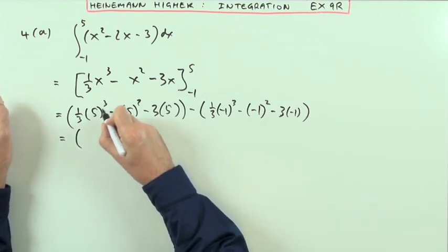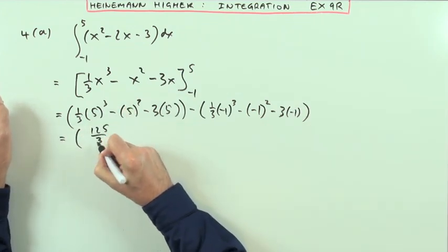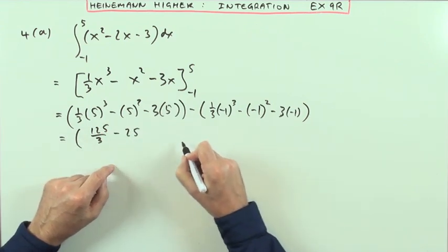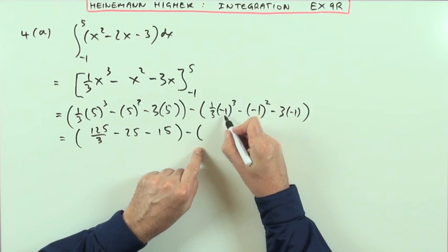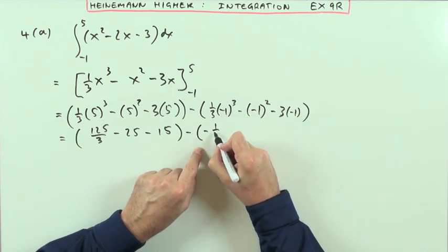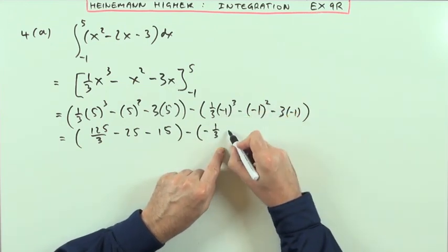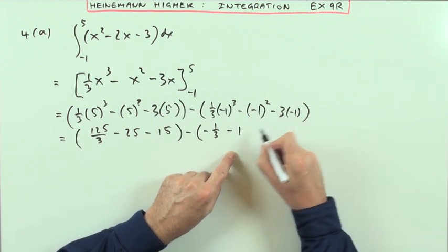Let's start working this out. That's 125 over 3. Minus 25 minus 15. That's still negative with the odd power, so it's minus a third, but that's positive with the even one, so it's minus 1, and that's positive 3.